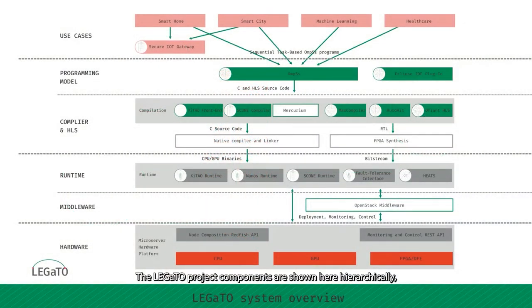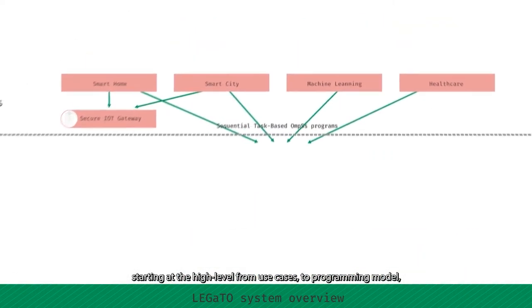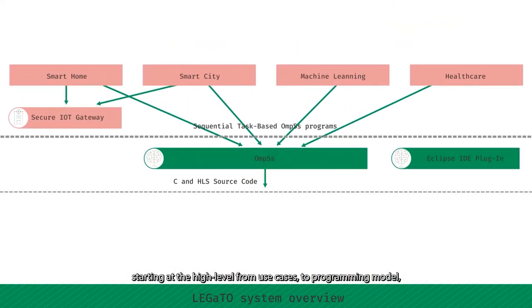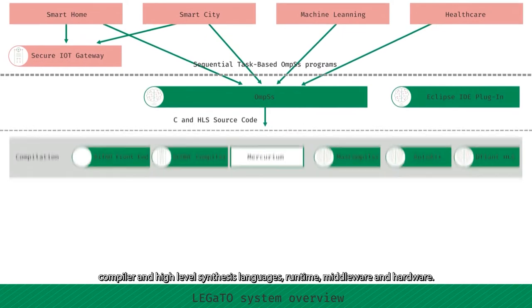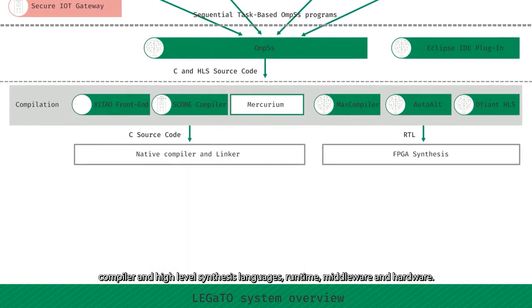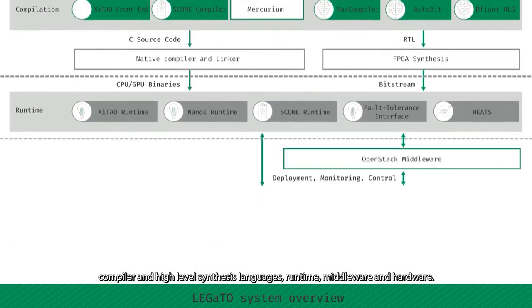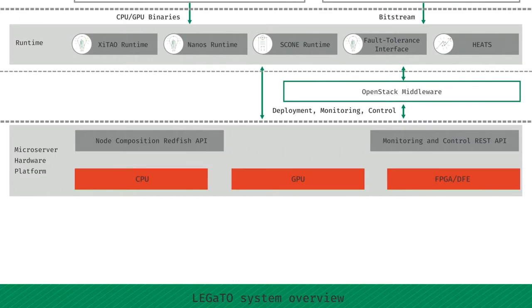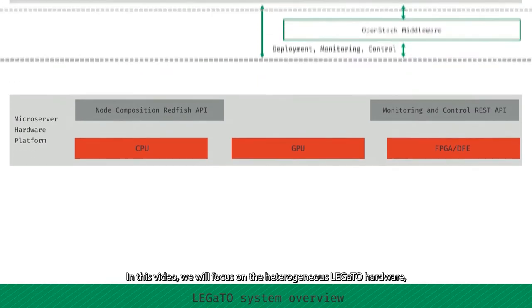The Legato project components are shown here hierarchically, starting at the high level from use cases to programming model, compiler and high-level synthesis languages, runtime, middleware, and hardware.